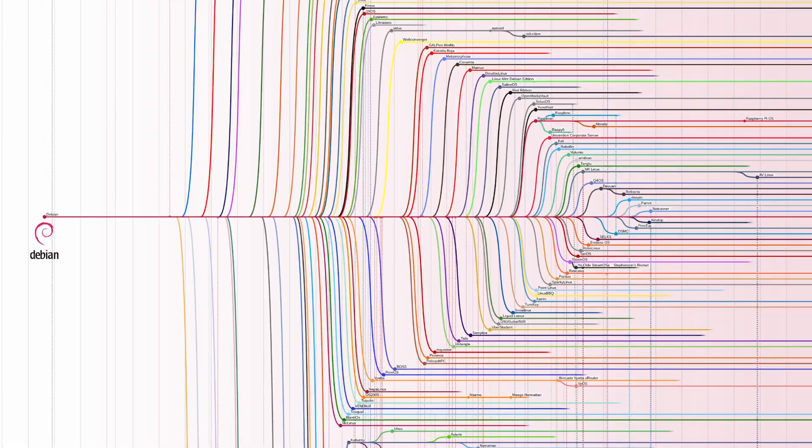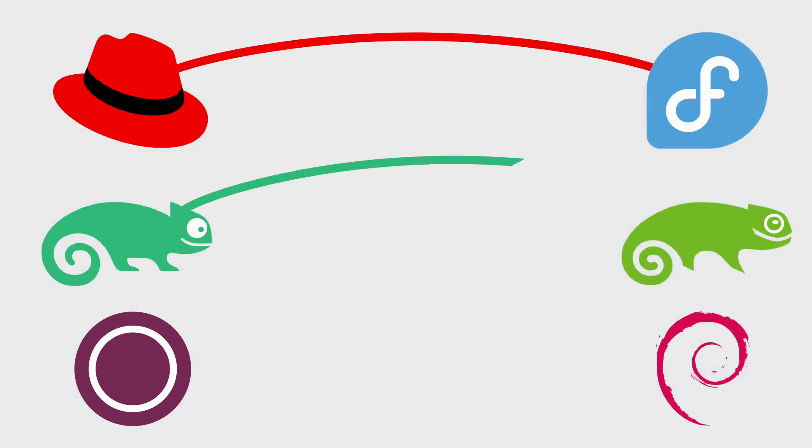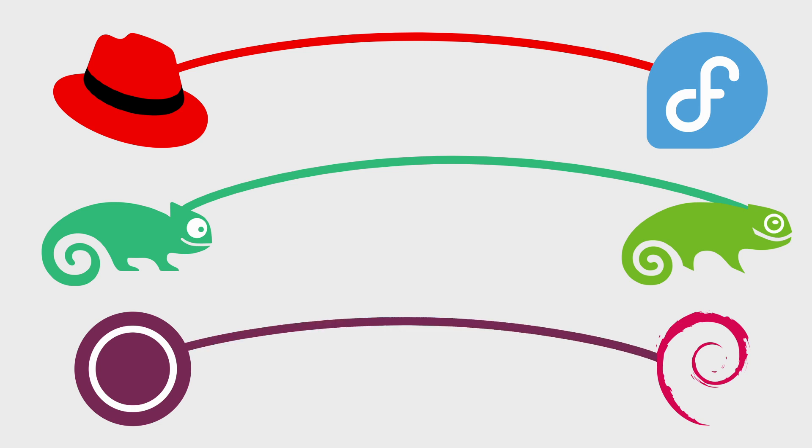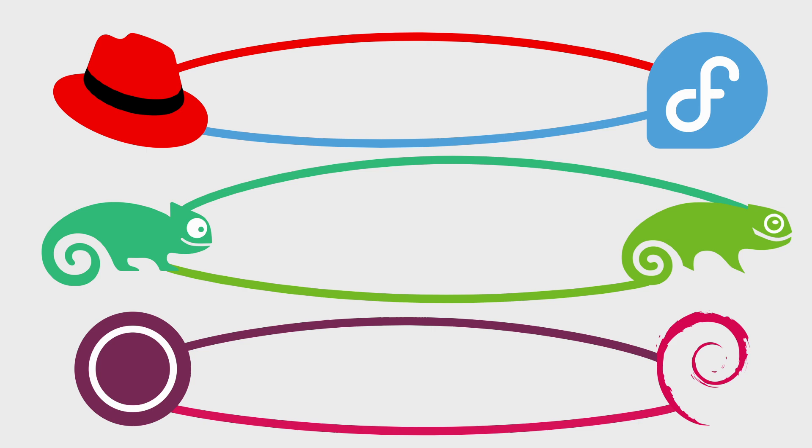Some Linux distros have a family tree that would make the Kardashians jealous. You've got the big enterprise players like Red Hat, SUSE, and Canonical. And then you've got their community buddies like Fedora, OpenSUSE, and Debian. Those enterprise distros are using their community buddies as building blocks. Red Hat's using Fedora, SUSE is using OpenSUSE, and Canonical's Ubuntu is using Debian. The enterprise companies give resources and contributions to their community counterparts, and the community distros provide a foundation to base those enterprise products on top of — a symbiotic relationship where both sides benefit.